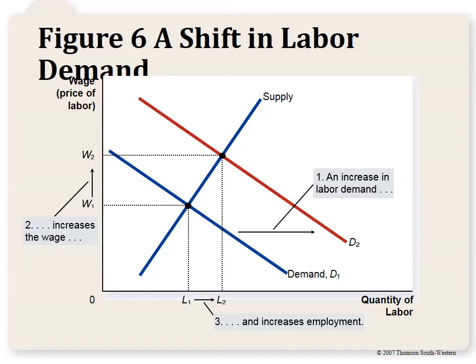When graphing these increases and decreases in labor supply and demand, you graph them exactly the same as any other market. The key difference is that instead of 'price' on the vertical axis, we call it 'wage,' and instead of 'quantity' on the horizontal axis, we call it 'labor.'